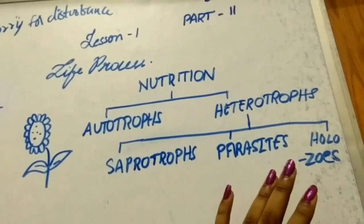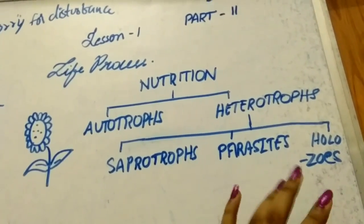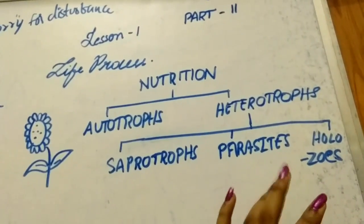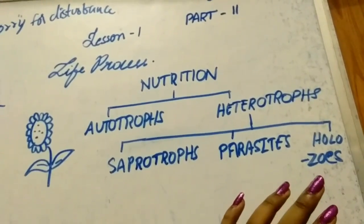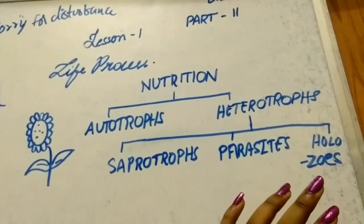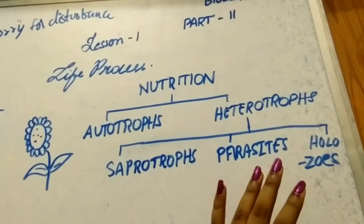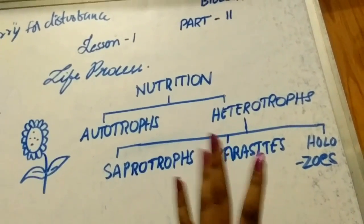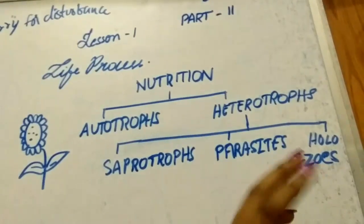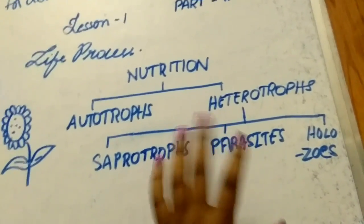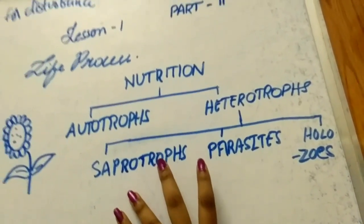Saprophytes obtain their food from dead plants like rotten leaves, dead and decaying animal bodies, and other decaying organic matter. Fungi like bread molds and Rhizopus are the best examples of saprophytes and saprophytic nutrition.